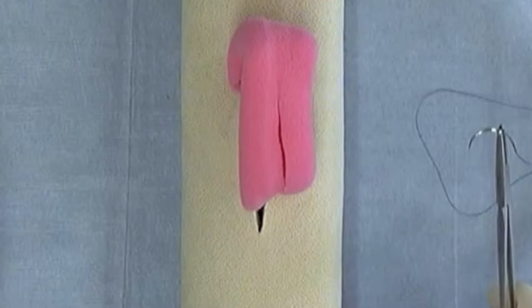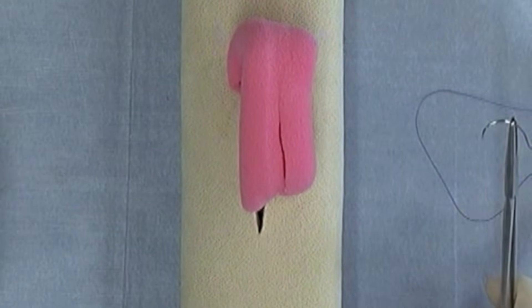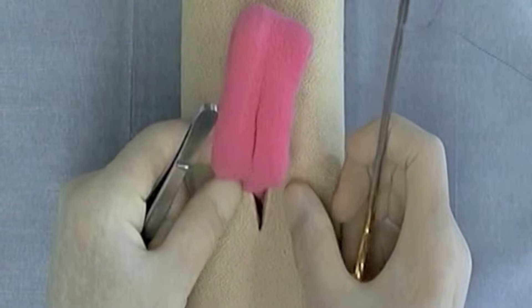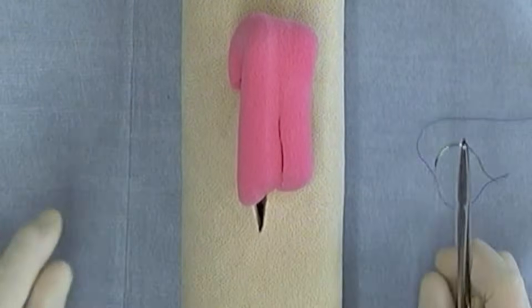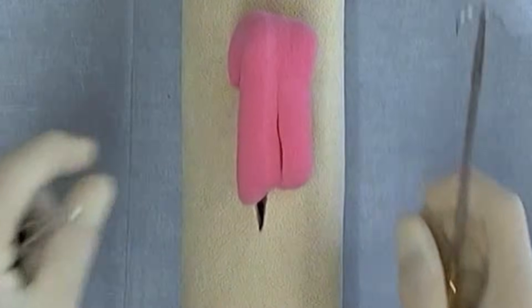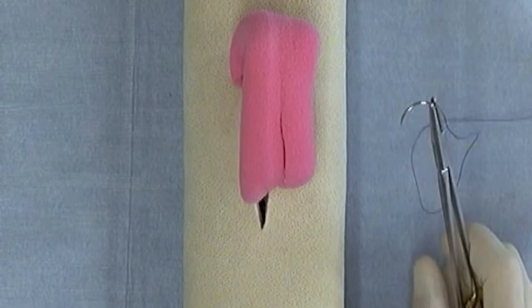The Lembert, the Connell, the Cushing are all inverting suture patterns, and so they're very difficult to practice on the skin portion of the daisy. Much easier to practice on the intestinal portion of the daisy.